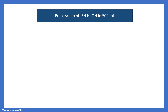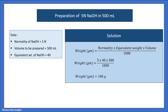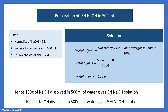Example 4: Preparation of 5 normal NaOH in 500 ml — in this case the volume has been changed. Data: normality = 5 N, volume = 500 ml, equivalent weight = 40. Weight = 5 × 40 × 500 / 1000 = 100 grams. Hence, 100 grams of NaOH dissolved in 500 ml of water gives 5 N and 5 molar NaOH solution.